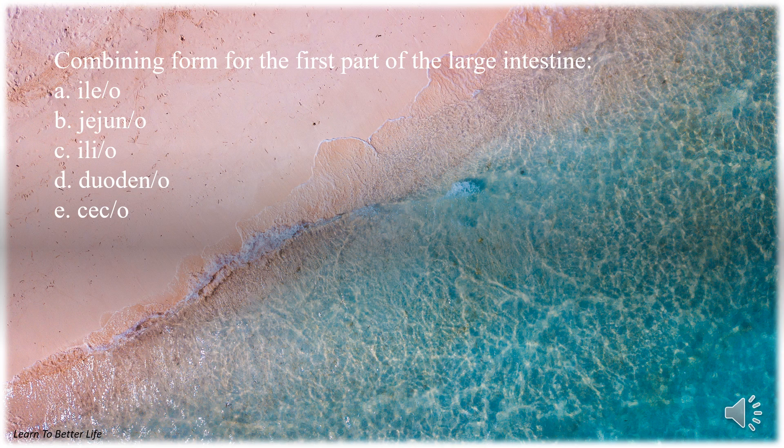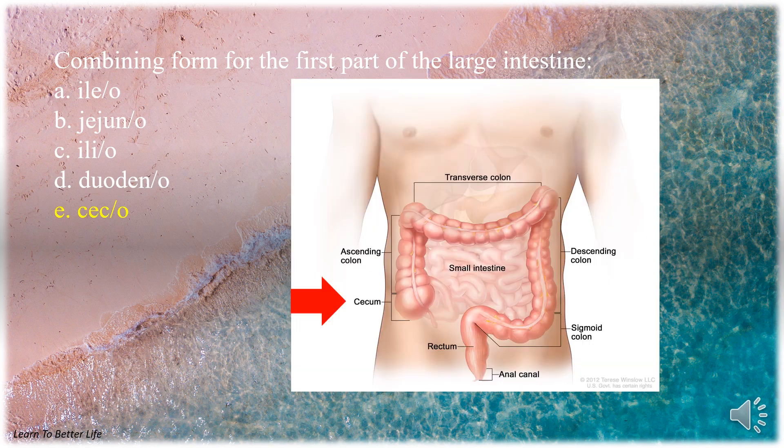Question 1. Combining form for the first part of the large intestine. A. Ilio. B. Jejuno. C. Ilio. D. Duodeno. E. Seco. The answer is E. Seco.